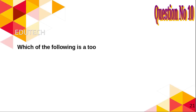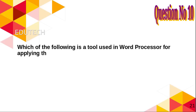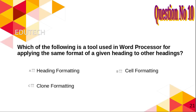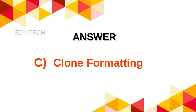Question 10: Which of the following is a tool used in a word processor for applying the same format of a given heading to other headings? A. Heading formatting, B. Self formatting, C. Clone formatting, D. Index formatting. Answer: Clone formatting. Thank you.